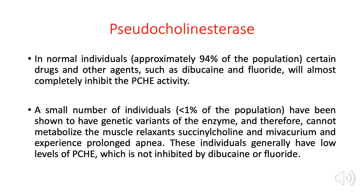This is very important. In normal individuals — 94% of the population — pseudocholinesterase enzymes are inhibited by the drugs dibucaine and fluoride. If you are normal, your enzyme will be inhibited by dibucaine and fluoride. However, 1% of the population have genetic variations in their pseudocholinesterase enzyme. Their enzymes are not inhibited by dibucaine and fluoride, and something is wrong with their enzyme — it cannot metabolize succinylcholine.